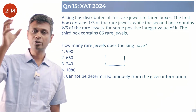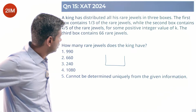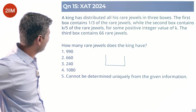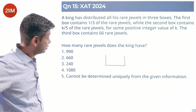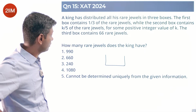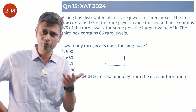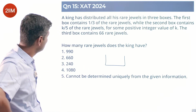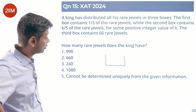So the total number of rare jewels must be a multiple of 3. The second box contains k by 5 of the rare jewels for some positive integer value of k — it could be 1/5, 2/5, 3/5, or 4/5, whatever that is. The third box contains 66 rare jewels.